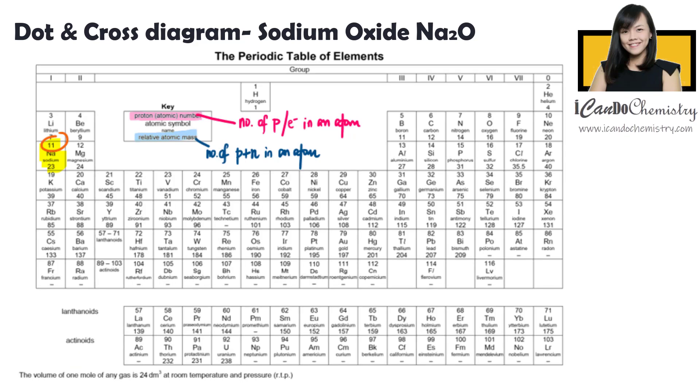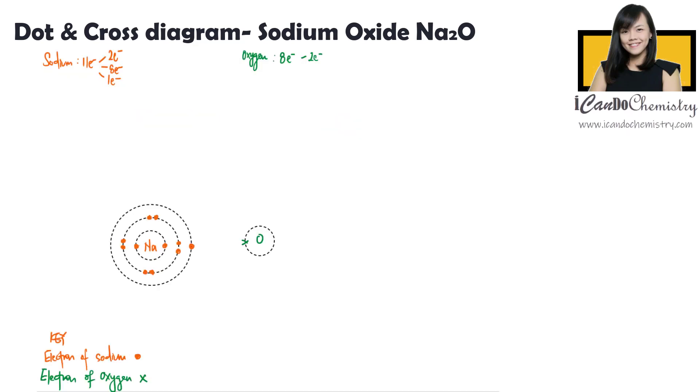Now the non-metal in this compound is oxygen. It is here in the periodic table. Oxygen has eight electrons. Let's use cross to represent the electrons of oxygen. The first shell holds two. The second shell holds six. Now oxygen has only six electrons in the outermost shell.